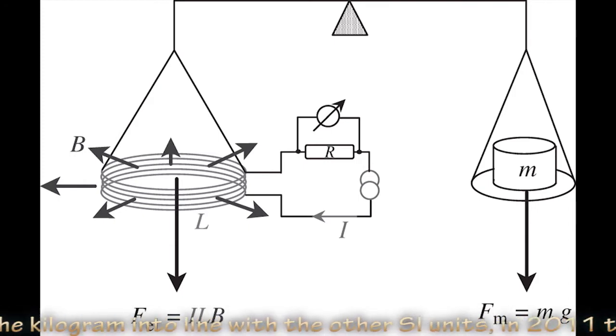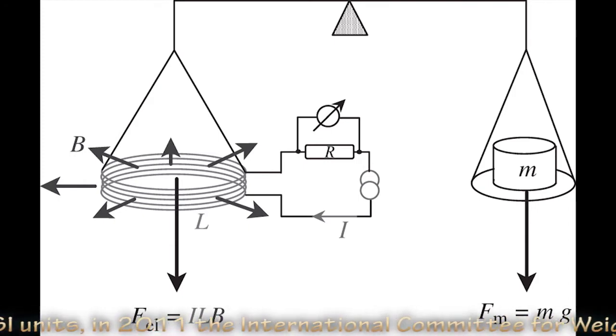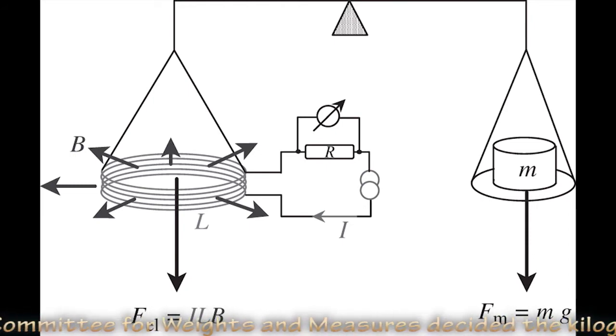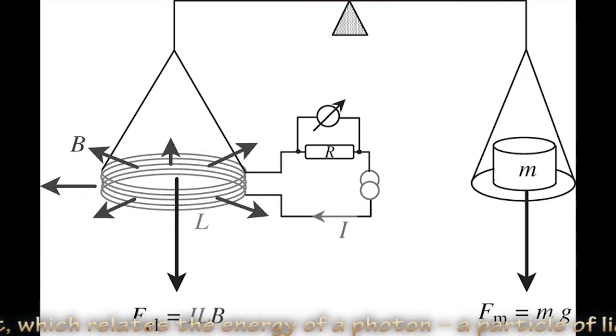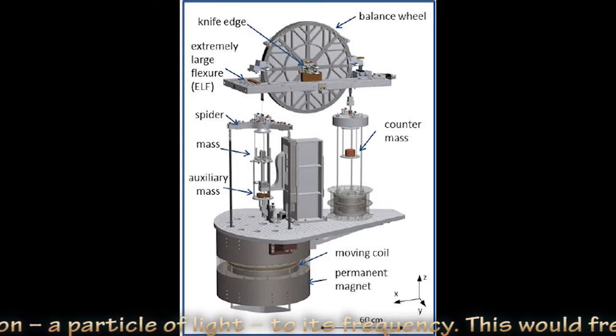To bring the kilogram in line with the other SI units, in 2011 the International Committee for Weights and Measures decided the kilogram should be redefined in terms of Planck's constant, which relates the energy of a photon, a particle of light, to its frequency.